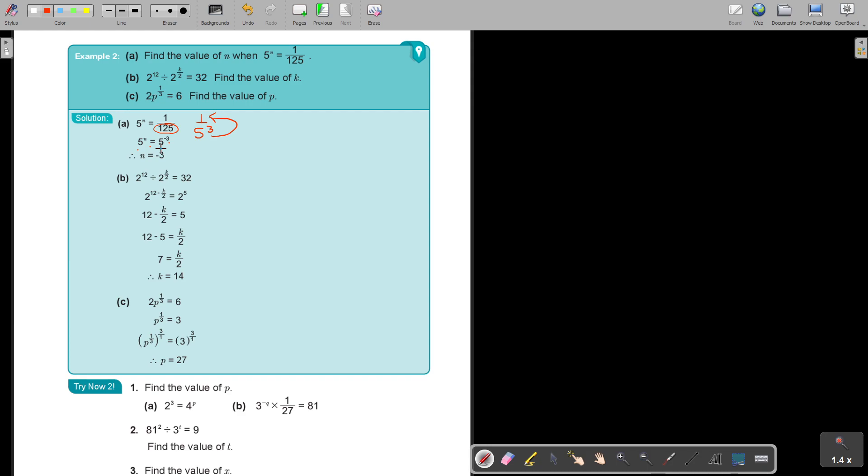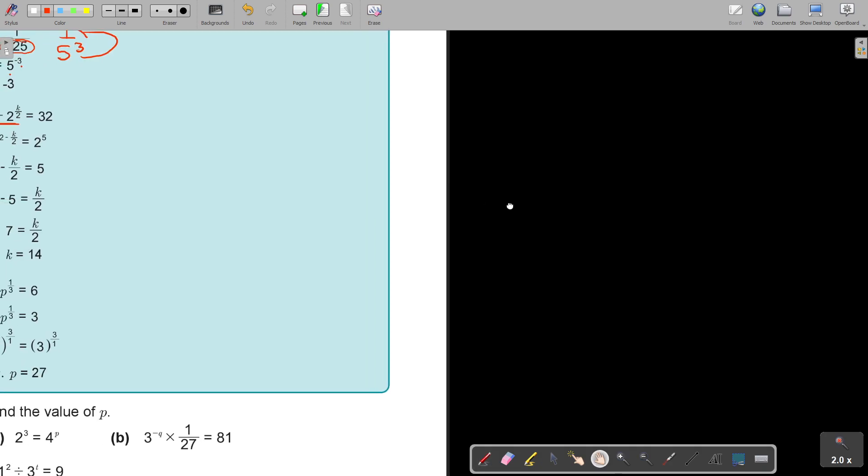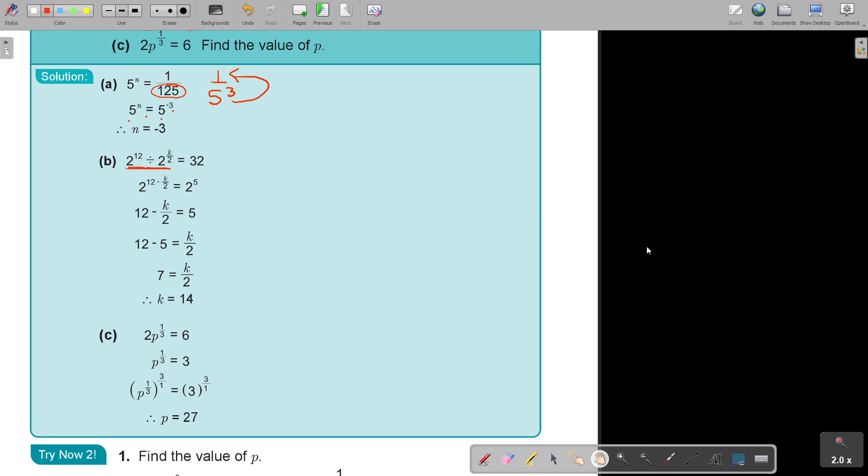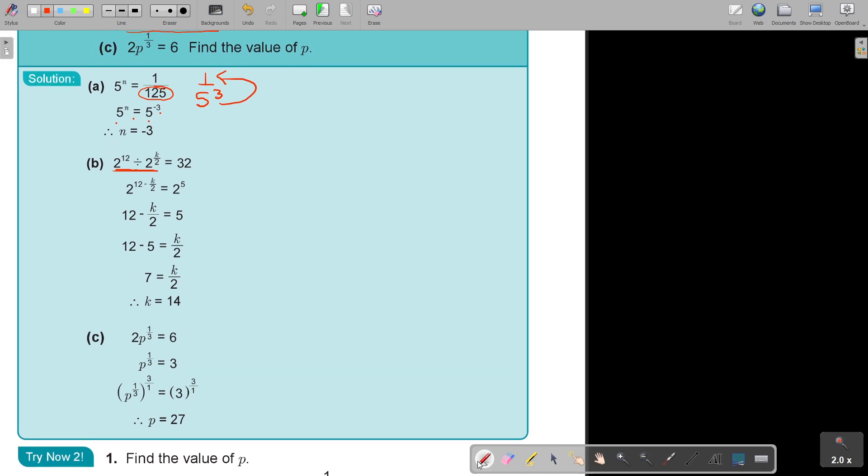Now, let's go a little bit more challenging. This side, I'm going to treat like an expression. If the bases are the same, I keep the base and I subtract, because it's division, the exponents. Then I take this to prime factors, which is 2 to the power of 5. Now, if the bases are the same, I can say 12 minus k over 2 is equal to 5. So I equate the indices. Now it's just an equation. I simplify, and you get that the value of k is 14.